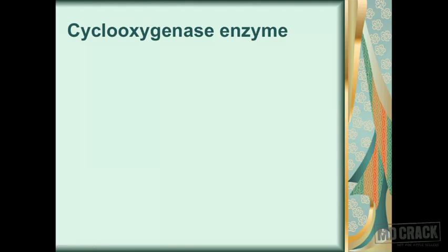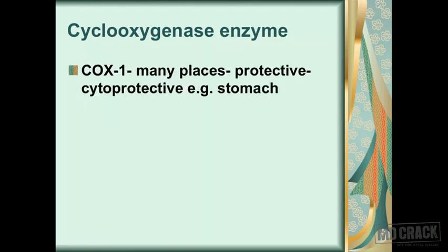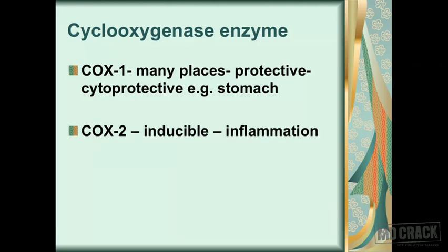What are the types of cyclooxygenase enzyme? COX-1 is present at many places and serves a protective function. For example, it works as cytoprotective in the stomach — as long as COX-1 is present in the stomach, it protects the gastric mucosa. COX-2 is an inducible enzyme, secreted at sites of inflammation. COX-2 is responsible for converting various substances into prostaglandins, leading to inflammatory changes.